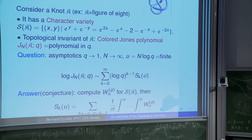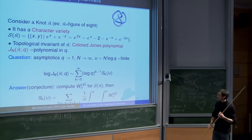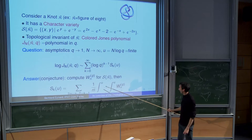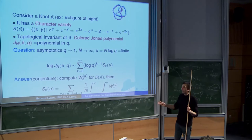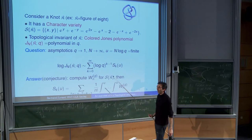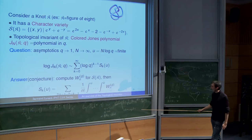For the figure-eight knot, the character variety gives a curve with an equation relating x and y. Take it as your spectral curve and apply the topological recursion. Compute the integrals of omega_{g,n} from 0 to u over all variables z_i, divide by n factorial, sum over g and n such that 2g + n - 2 = k - 1, and call that S_k(u). The conjecture is that this computes the asymptotics of the Jones polynomial. Even the leading term is not proved. With my student Gaetan Borot, we computed up to the third power of log q for this knot and it matches. We can prove it for torus knots and even extend to the HOMFLY polynomial for torus knots.